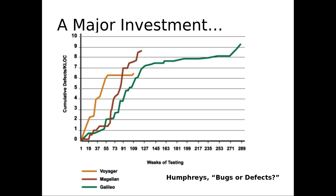This is from NASA — data on their cumulative defects per thousand lines of code for a certain type of project. Anyone want to guess what sort of project it is from these names? Rocket? Yeah — these are deep space probes. These are the things sent out into areas of the solar system, eventually reaching the outer solar system. Voyager is outside the solar system now. Galileo may have gone to Saturn. Magellan was another probe.